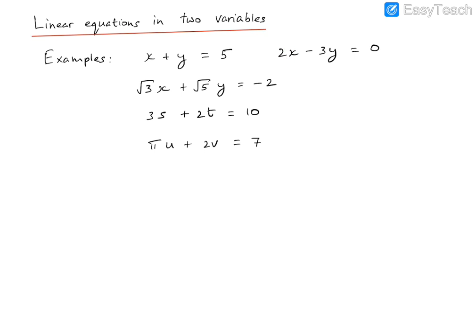It is a general convention to represent variables using the letters X, Y, Z, but of course we can use other letters. For instance, we have used the letters S and T to represent two variables here, and in another example, U and V are used. Generally you will see X, Y, Z used most frequently. These are all examples of linear equations in two variables, each equation having two letters, each representing one of the variables.